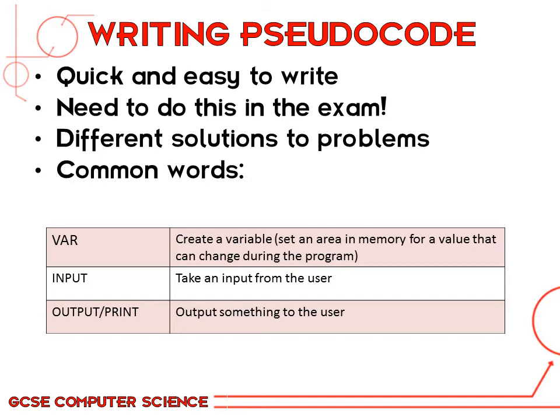When you see VAR, it's usually for creating a variable. A variable is when you create an area of memory for a value that can change during that program. Input is used when you need to get some sort of input from the user — something you type in or click. Output or print is used when something is going to be output to the screen.